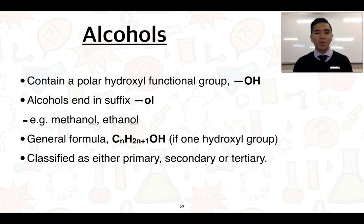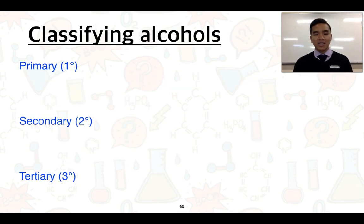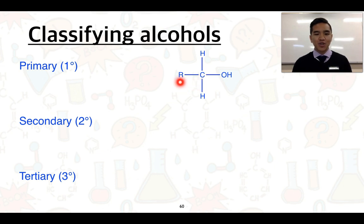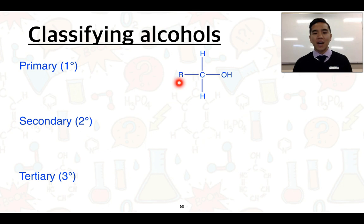We can also classify alcohols as either primary, secondary, or tertiary. To determine this, we consider where the hydroxyl group is bonded — which carbon it's bonded to — and then work out how many other carbon atoms that carbon is bonded to. Starting with a primary alcohol, the hydroxyl functional group is bonded to a carbon, and that carbon itself is bonded to one other carbon atom. The R group here just indicates the rest of the hydrocarbon chain.